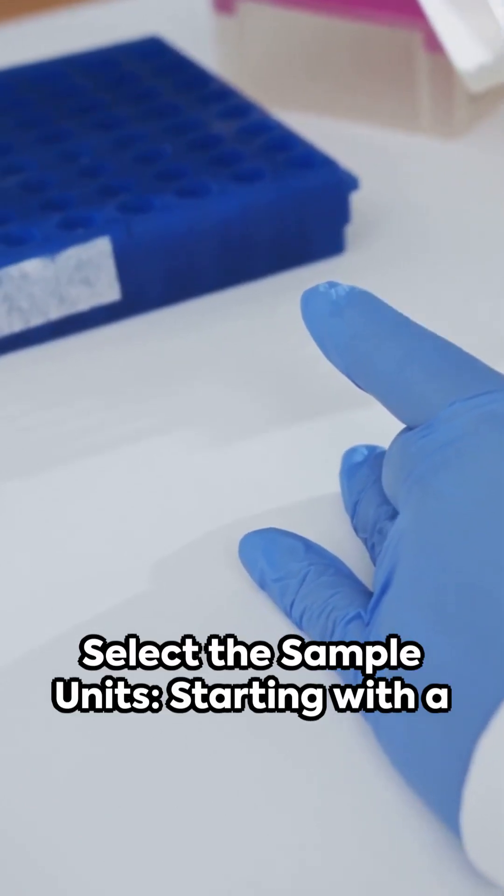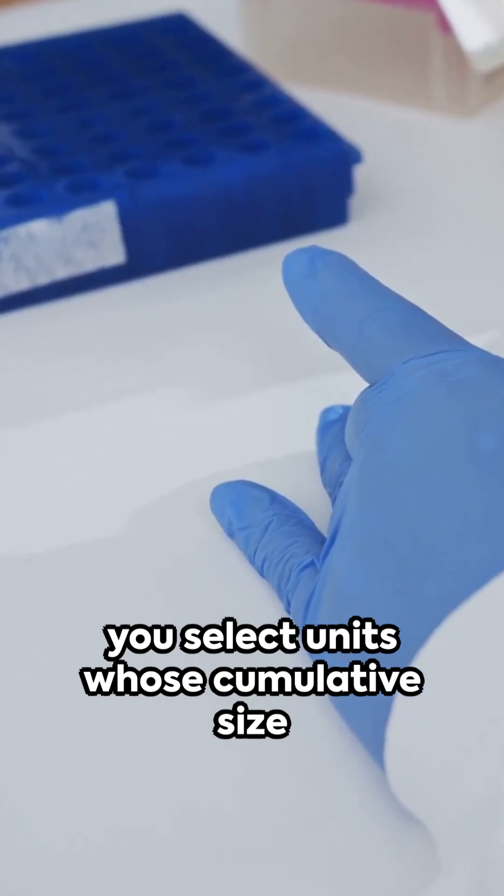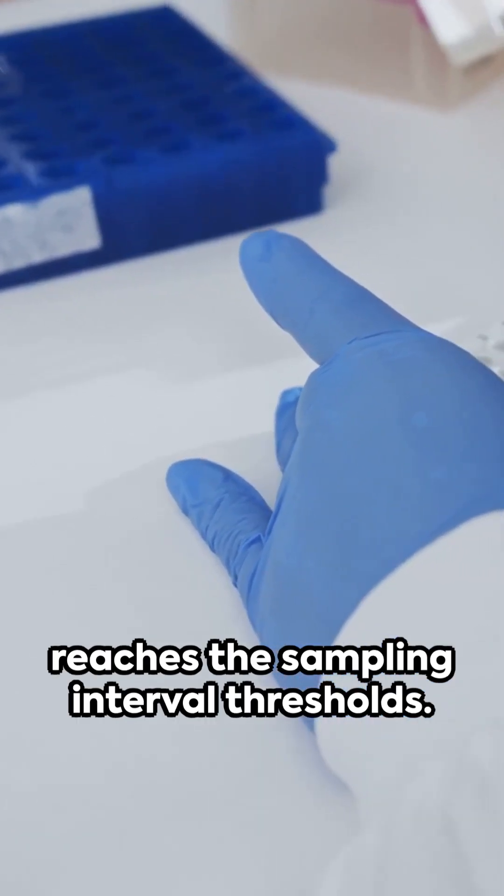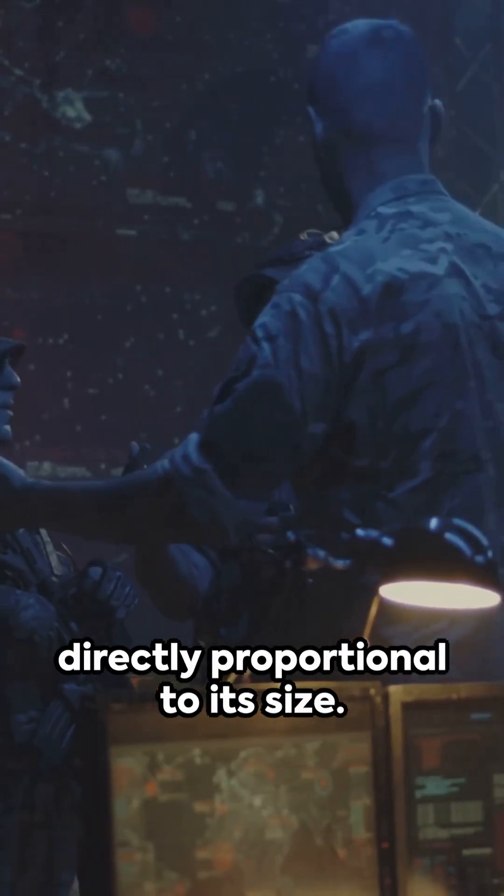3. Select the sample units. Starting with a random start within the first interval, you select units whose cumulative size reaches the sampling interval thresholds. Each unit's probability of selection is directly proportional to its size.